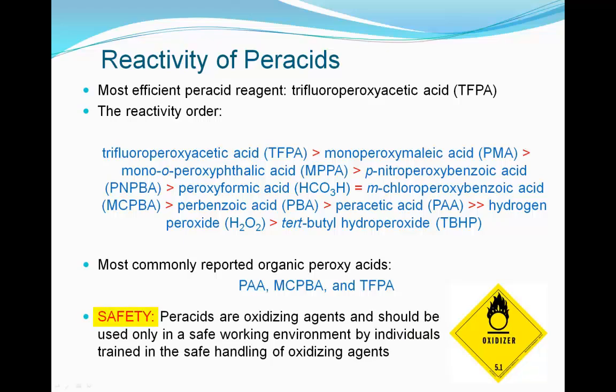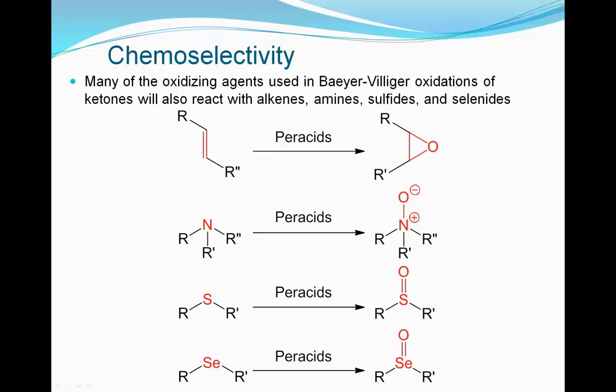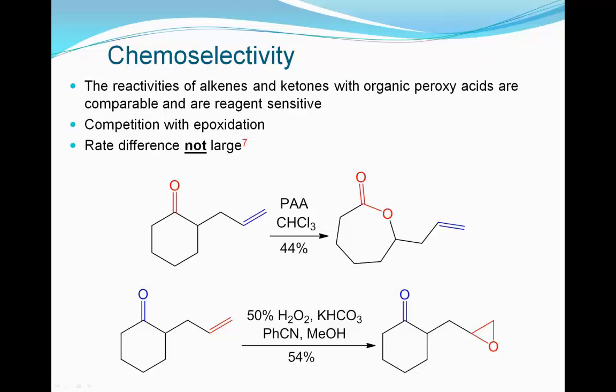Peracids are oxidizing agents and should be used only in a safe working environment by individuals trained in the safe handling of oxidizing agents. Many of the oxidizing agents used in Baeyer-Villiger oxidations of ketones will also react with alkenes, amines, sulfides, and selenides. Reagents which feature chemoselective oxidations in the presence of some of these functional groups have been developed. The reactivities of ketones and alkenes with organic peroxy acids are comparable and reagent sensitive; thus, Baeyer-Villiger oxidation competes with epoxidation.